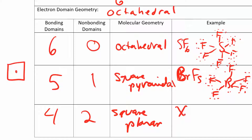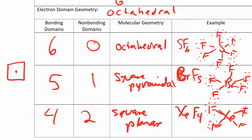This is something like XeF4. Once you start converting bonding to non-bonding domains, it does matter where you place them. You're not removing electrons — you're turning bonding into non-bonding. And then you have one lone pair on the top and one on the bottom, so that's a square planar situation.